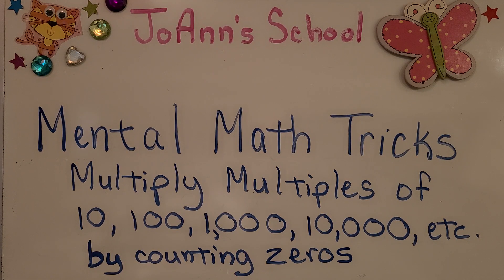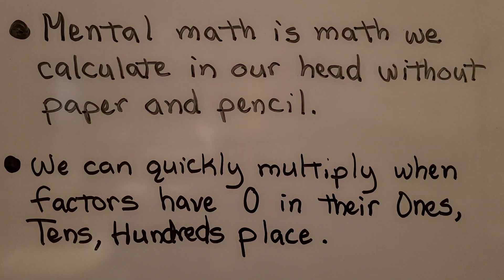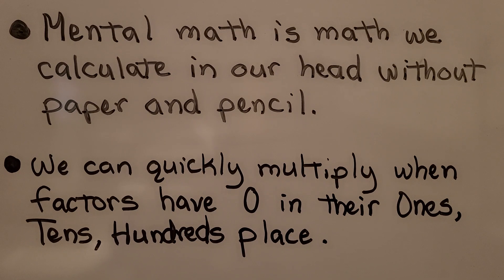Mental math tricks: multiply multiples of 10, 100, 1000, 10,000, etc. by counting zeros. Remember, mental math is math we calculate in our head without paper and pencil. We can quickly multiply when factors have zero in their ones, tens, or hundreds place.